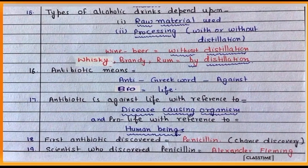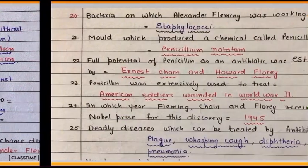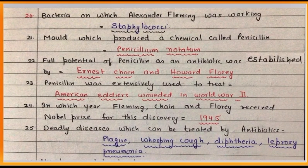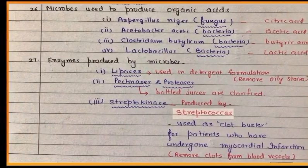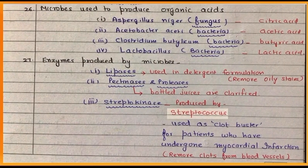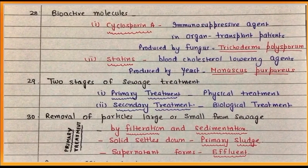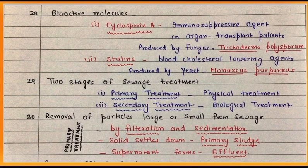Alexander Fleming was able to discover accidentally an antibiotic called penicillin. This antibiotic was extensively used to treat wounded American soldiers in World War Two. Organic acids and different enzymes, along with bioactive molecules, are produced by using different microbes.